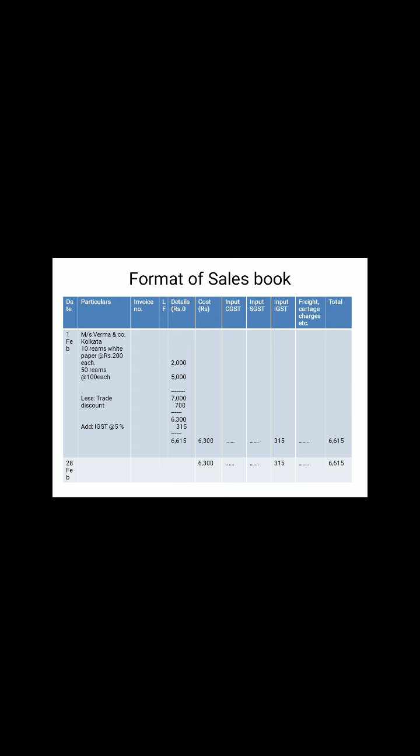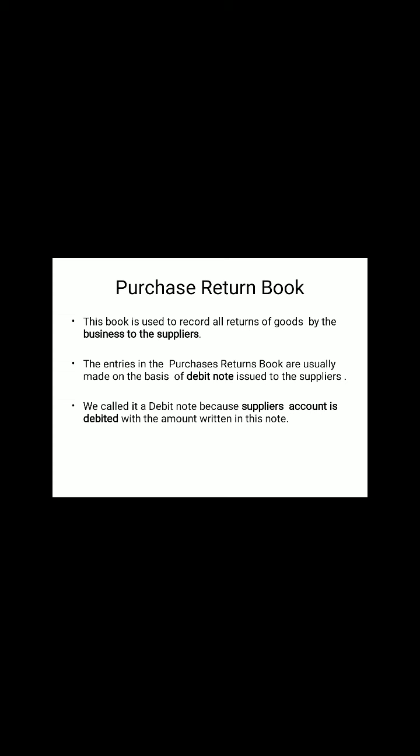Now I am moving to the next topic: the purchase returns book. When goods are purchased on credit and then returned, this book is used. If goods are purchased on cash and then returned, it goes to the cash book. So the purchase returns book records all returns of goods by the business to the supplier — only for goods purchased on credit.